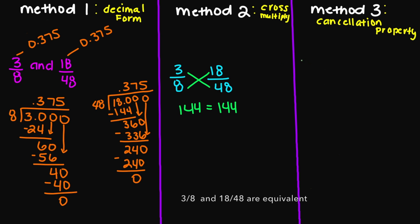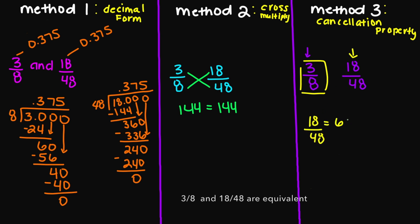So now let's try method number three. So 3 over 8 and 18 over 48. We know for my 3 over 8, I cannot simplify any further, so I'm just going to leave this fraction alone as 3 over 8. However, let's look at the 18 over 48 — yes, I can simplify this further. My numerator: I know that 6 times 3 is going to give me 18. And my denominator, I also know that 6 times 8 is going to give me 48.